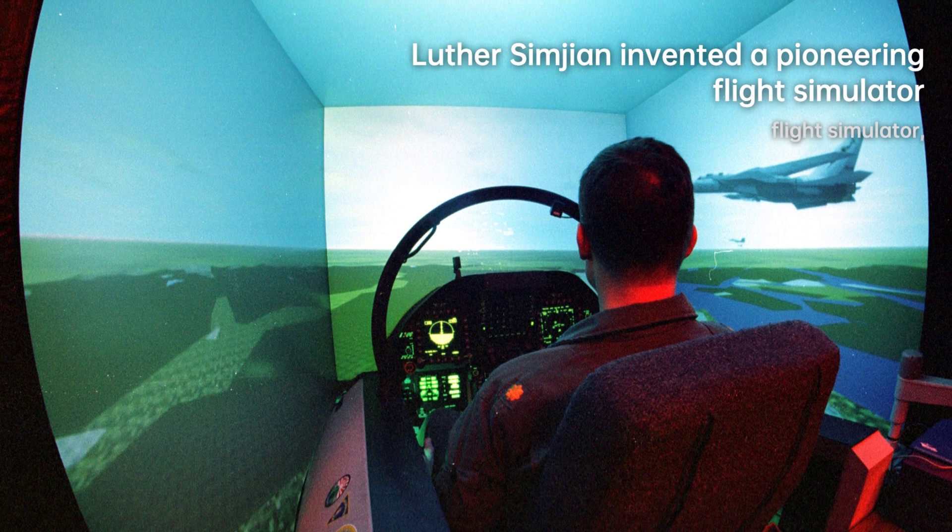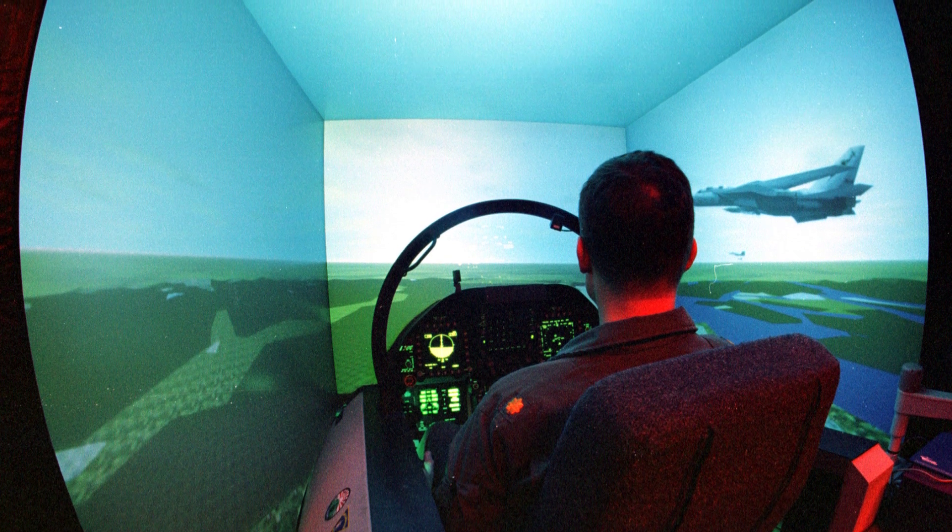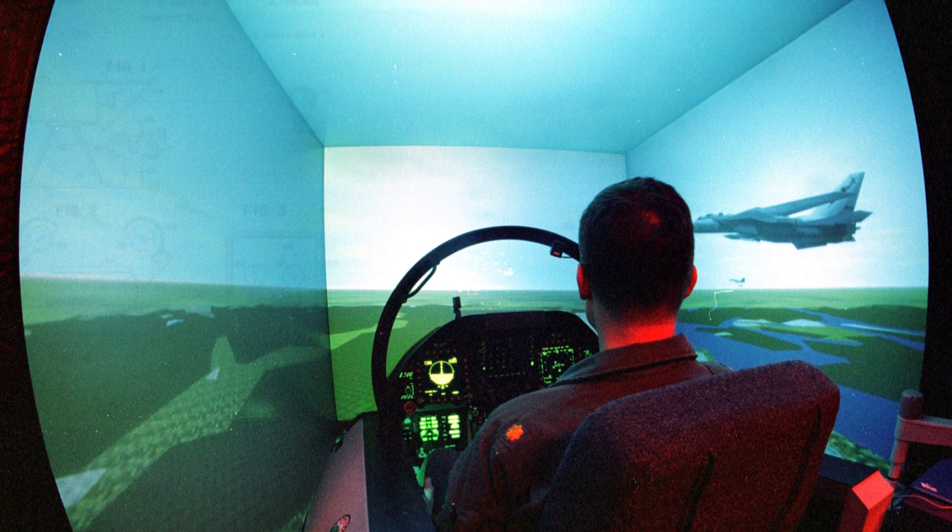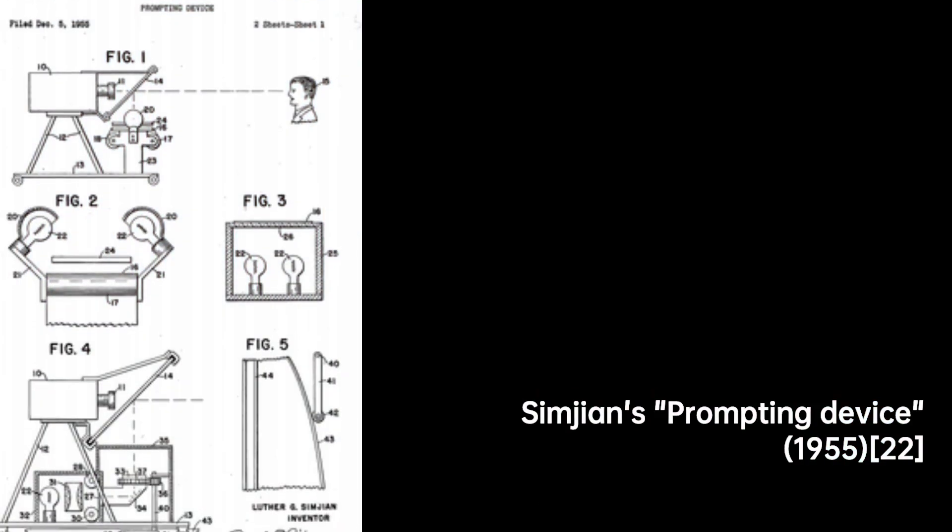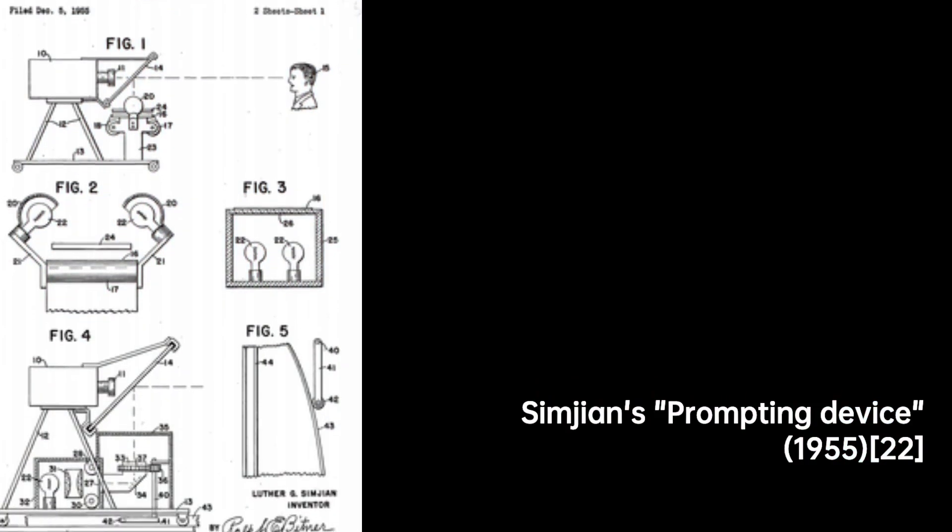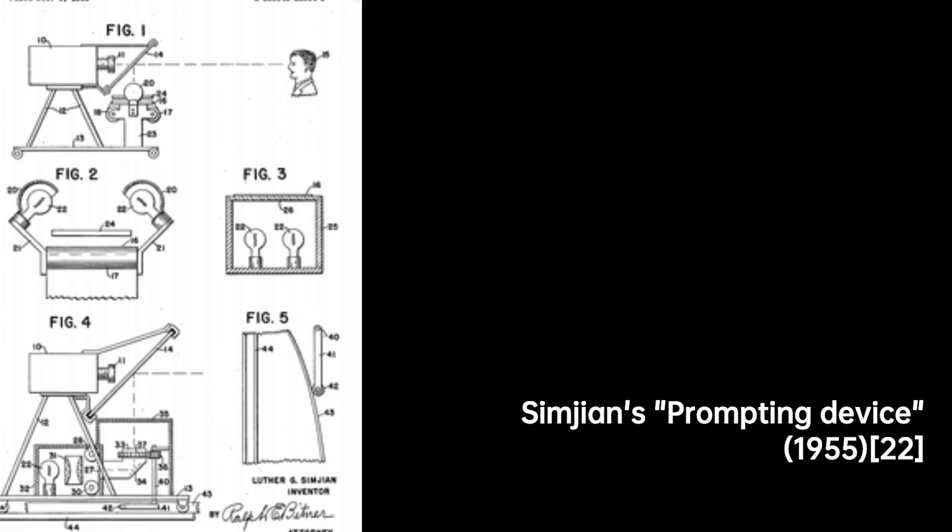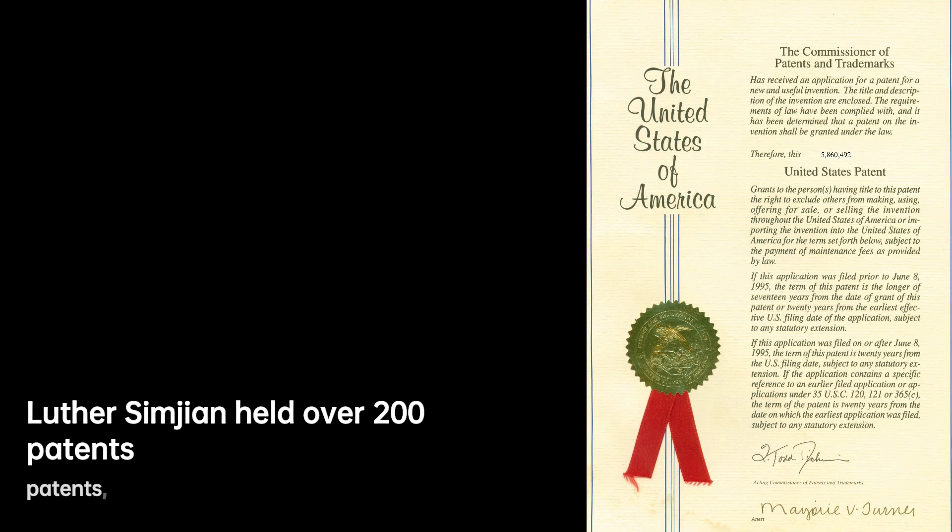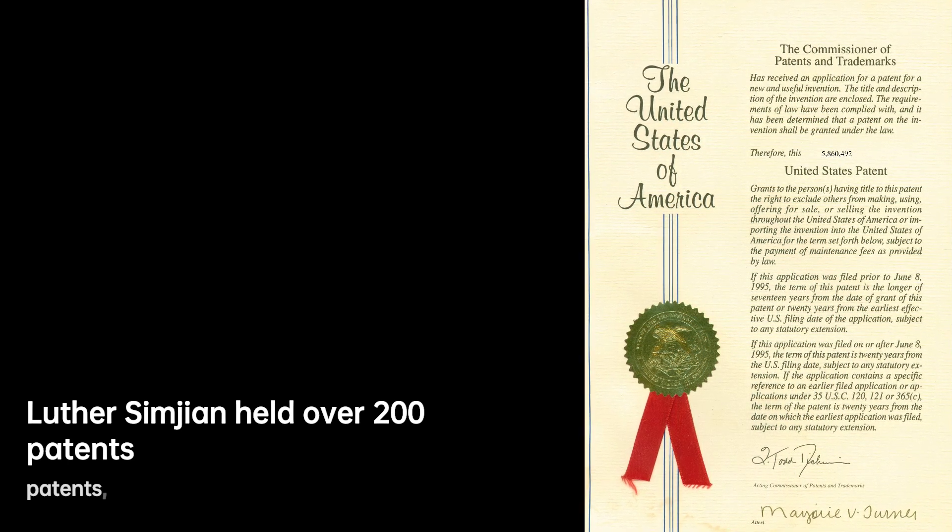Luther Simjian, born in Aintab, Ottoman Empire on January 28, 1905, had a humble beginning. His father George worked as an insurance broker, but tragedy struck when Luther was just a few months old. His mother Josephine passed away, leaving him, his father, and two half sisters. Despite the hardships, Luther's family persevered until the Armenian Genocide forced them to flee to Aleppo, Syria in 1915.